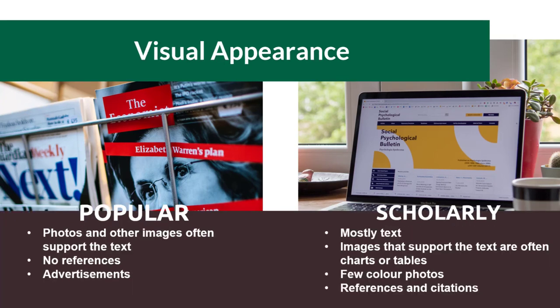Finally, how is the information visually presented? Popular sources often contain photos and other images to support the text, and may contain advertisements. Scholarly sources are mostly text-based, and images that support the text are usually charts or tables. There are few, if any, color photos.